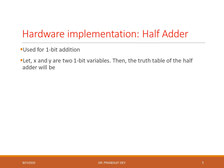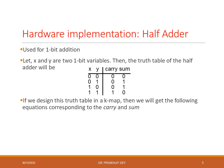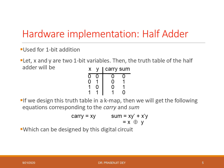A half adder is used for one-bit addition. If x and y are two one-bit variables, the truth table shows: for inputs 0,0 the sum is 0 and carry is 0; for 0,1 carry is 0 and sum is 1; for 1,0 carry is 0 and sum is 1; and for 1,1 there is a carry and sum is 0. From the Karnaugh map, carry equals x AND y, and sum equals x XOR y. The corresponding digital circuit implements this half adder in real hardware.